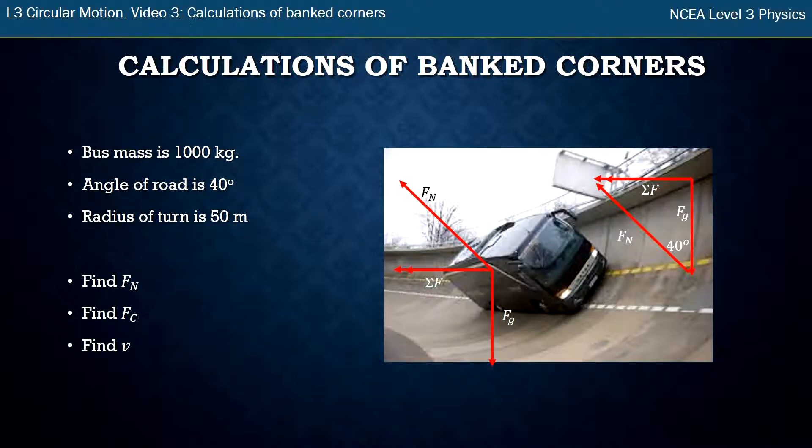We had from last time our force diagram which had a downwards force of gravity, our normal force which is always perpendicular to the road surface, and our total force was horizontal which made this triangle here.